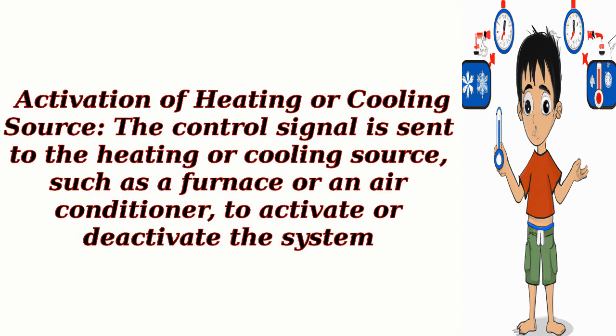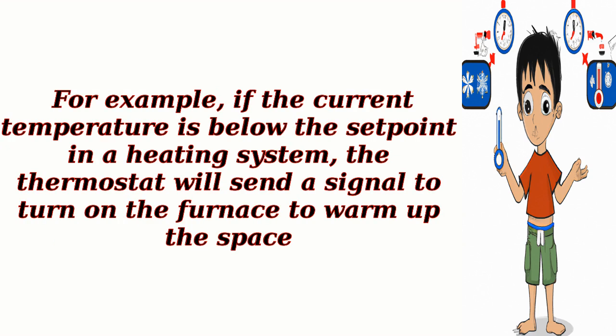Activation of heating or cooling source: The control signal is sent to the heating or cooling source, such as a furnace or an air conditioner, to activate or deactivate the system. For example, if the current temperature is below the setpoint in a heating system, the thermostat will send a signal to turn on the furnace to warm up the space.